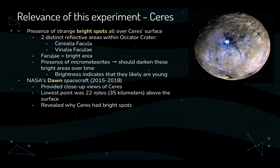Now we're going to talk about the relevance of this experiment. Going back to Ceres — the reason Ceres was so interesting is because there are strange bright spots all over its surface. Specifically, there are two reflective areas within the Occator crater: Cerealia Facula and Vinalia Faculae. Faculae basically means bright area. Since Ceres is exposed to micrometeorites which darken the surface over time, the brightness of these two areas indicates they are likely very young. NASA sent the Dawn spacecraft in 2015 to look at Ceres more closely. Its lowest point was 22 miles above the surface, and we finally found out why Ceres has bright spots.